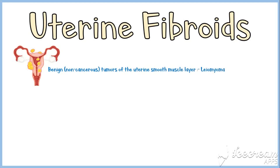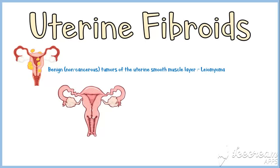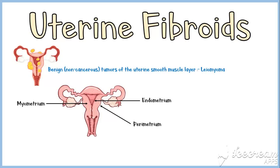Uterine fibroids are benign, or non-cancerous tumors of the uterine smooth muscle layer. They are also known as leiomyomas. The uterus consists of three layers: the endometrium, which is the inner epithelial layer consisting of uterine glands; the myometrium, which is the middle layer consisting of smooth muscle cells; and the perimetrium, which is the outermost layer, also known as the serous layer.